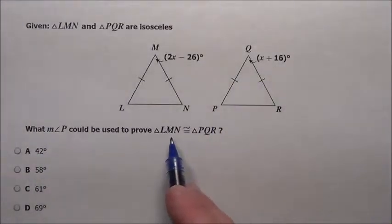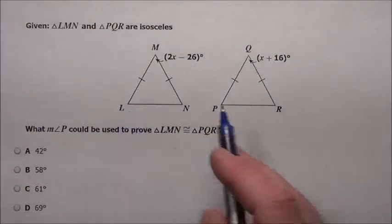What measurement for P could be used to prove that the two triangles are congruent, that they're exactly the same?